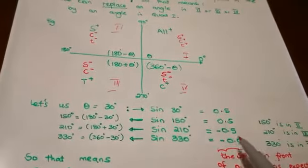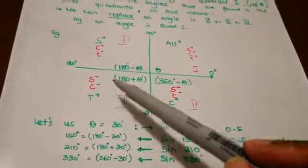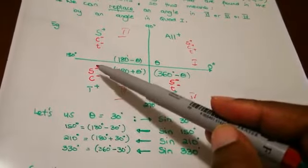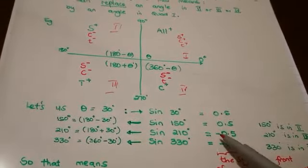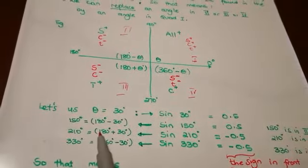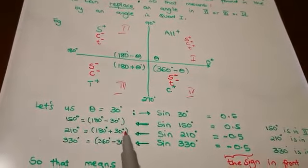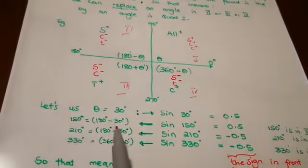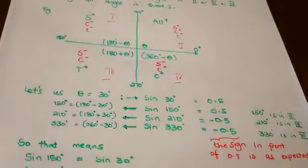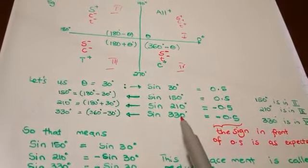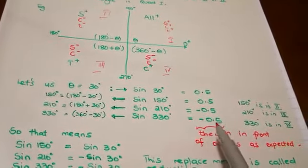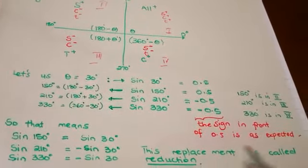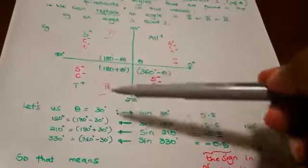Sin 210 equals negative 0.5. If you check here, 210 is in the third quadrant, and in the third quadrant sine is negative — that is why we are expecting the answer to be negative. The 0.5 comes from the fact that 210 is actually 180 plus 30, so 30 and 210 are in a relationship because of that 180. And then sin 330 equals negative 0.5. This one is in the fourth quadrant — fourth quadrant sine is negative, so the negative sign is as expected according to the quadrants.